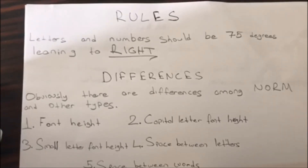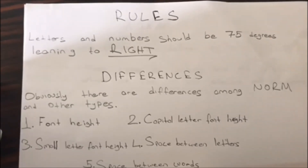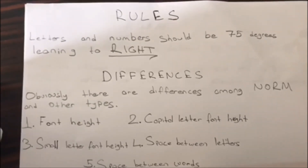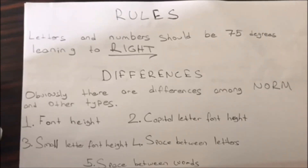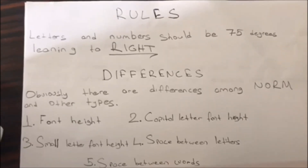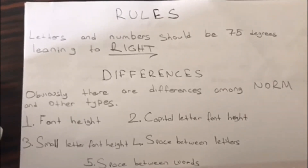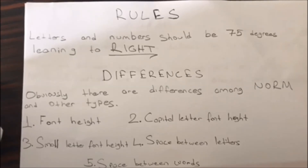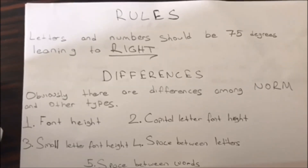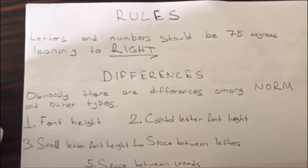Obviously, there are differences among norm and other types. First one is font height. Second, capital letter font height. Third, small letter font height. Fourth, space between letters. Fifth and last, space between words.